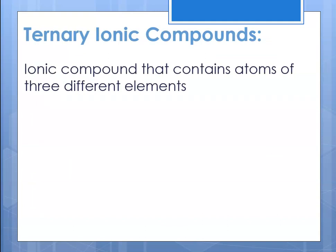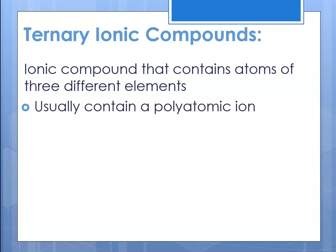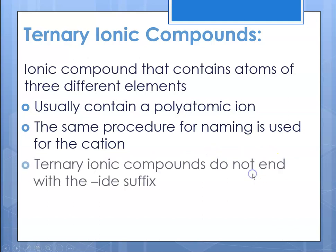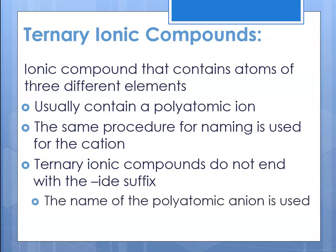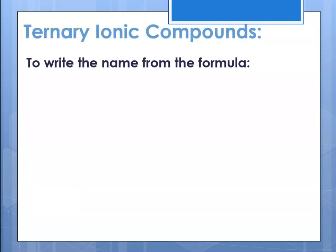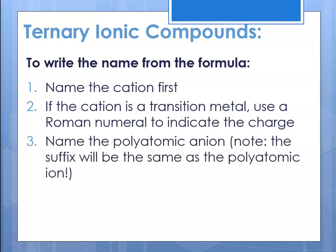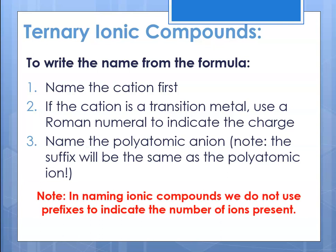What if it's a ternary ionic compound? That means it's an ionic compound containing atoms of three different elements, which means it usually contains a polyatomic ion. We follow the same procedure as naming a binary compound: name the cation first, and because it's ternary and contains a polyatomic ion, we do not end the name with the -ide suffix — rather, we just name the polyatomic ion. If the cation is a transition metal, use a Roman numeral to indicate its charge. Note that in naming ionic compounds we do not use prefixes to indicate the number of ions present.